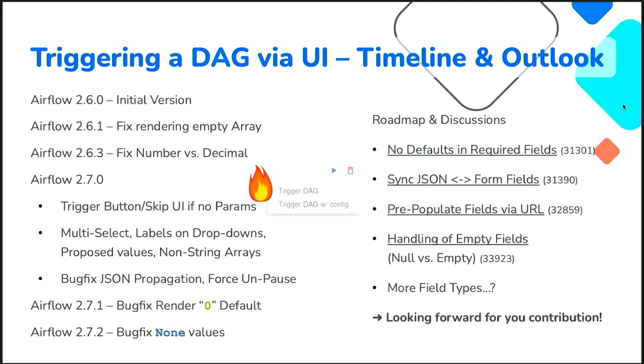Could one of the parameters be a file upload? There would be limitations since DAG run conf is serialized to the database and accessed many times. Cases where people pasted 10,000 lines into an array box caused problems when a map operator expanded to 10,000 tasks, bringing down the database. So we need to be careful about how much data is serialized in DAG run conf. The recommendation is to pass a reference to the file rather than the file content itself.